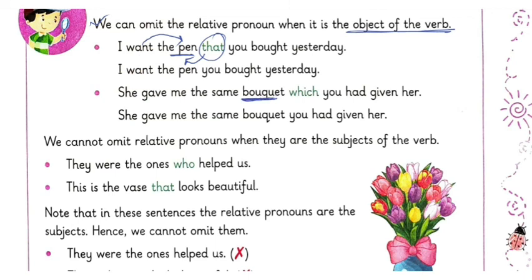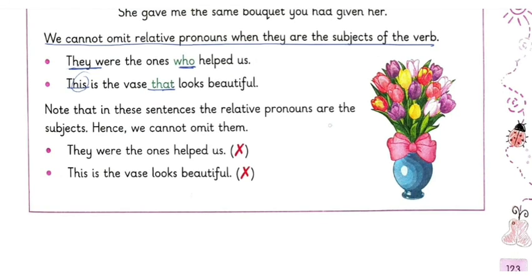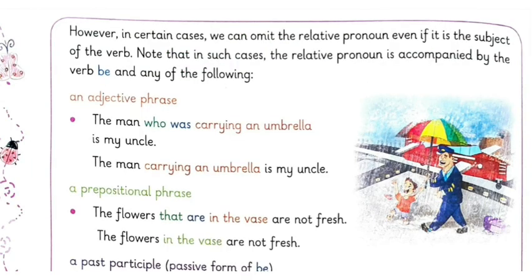'Which' here means the bucket, so 'which' is also the object of the verb and can be omitted. However, we cannot omit relative pronouns when they are the subject of the verb. 'They were the ones who helped us' — 'who' refers to 'they', the subject. 'This is the vase that looks beautiful' — 'that' is the subject of 'looks'. Since these relative pronouns are subjects, we cannot omit them.